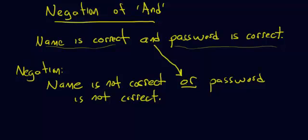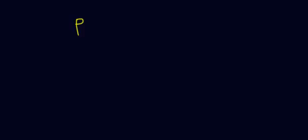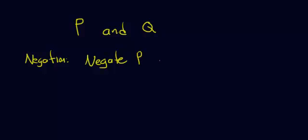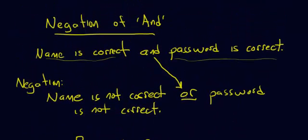At this point, if all you wanted to know was how do you negate AND, this is how you do it. If you had a statement P AND Q — where P could be something like 'username is correct' or 'all monkeys like to fly,' some statement — then the negation would be: NOT P OR NOT Q. That's it. That's the negation of AND. Stick around and I will explain why AND negates to OR.